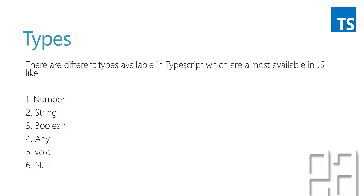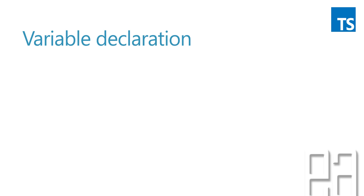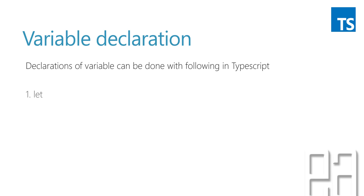Except for the any type, all other types are very self-explanatory and are available in languages like C# and Java. So that's what the different types available in TypeScript are. The variable declaration in TypeScript is also very easy — you can see one small but important change in TypeScript.